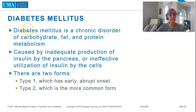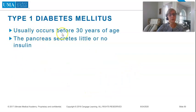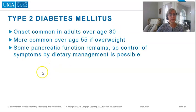Diabetes mellitus is a chronic disorder of carbohydrate, fat, and protein metabolism, caused by inadequate production of insulin by the pancreas or ineffective utilization of insulin by the cells. There are two forms. Type 1 has early abrupt onset; the pancreas secretes little or no insulin. Type 2 is more common, occurring in adults over age 30, more common over age 55 if overweight. Some pancreatic function remains, so control of symptoms by dietary management is possible.